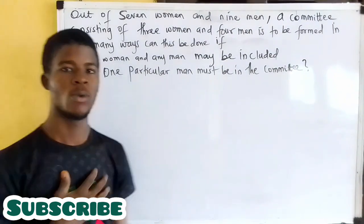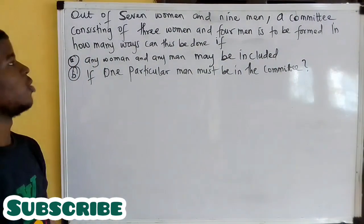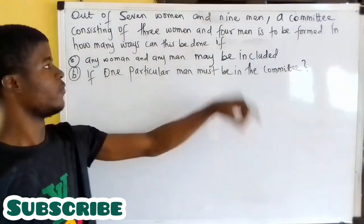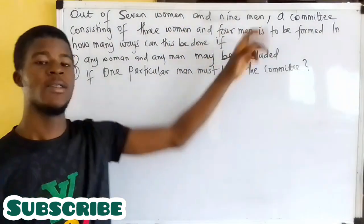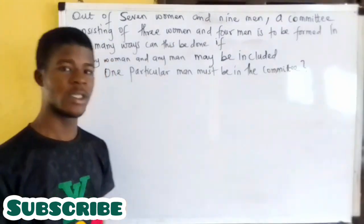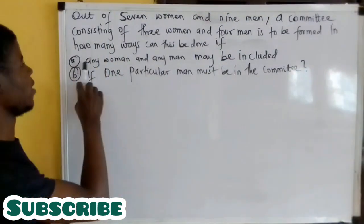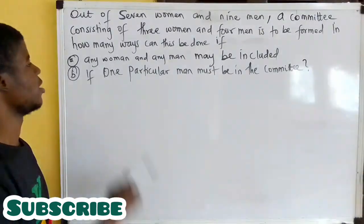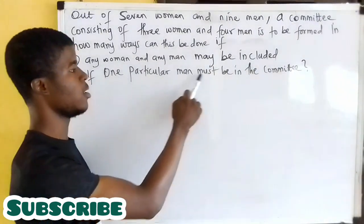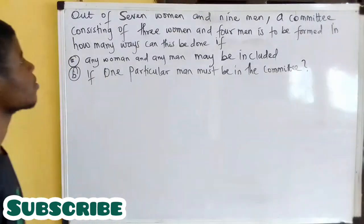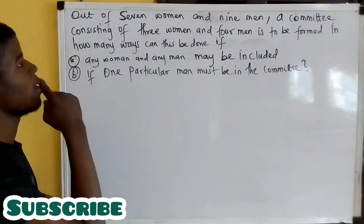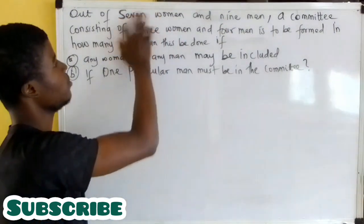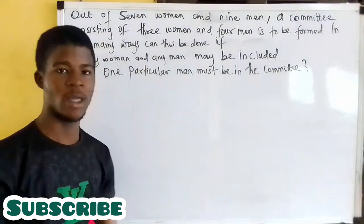In this question we are given that a committee of three women and four men is to be formed from seven women and nine men. In how many ways can this be done if any woman and any man may be in the committee, and if one particular man must be in the committee? We have seven women and nine men, to choose three women from and four men from.